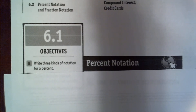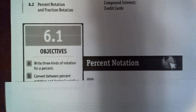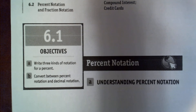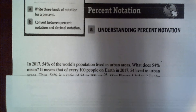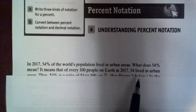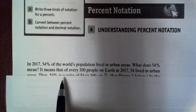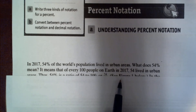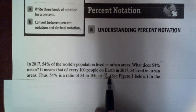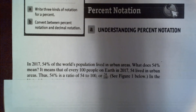Section 6.1 covers three kinds of notation for percents and how to convert between percent notation and decimal notation. For example, in 2017, 54 percent of the world's population lived in urban areas. That means of every 100 people on earth, 54 lived in urban areas — so 54 percent is a ratio of 54 to 100, or 54 divided by 100.